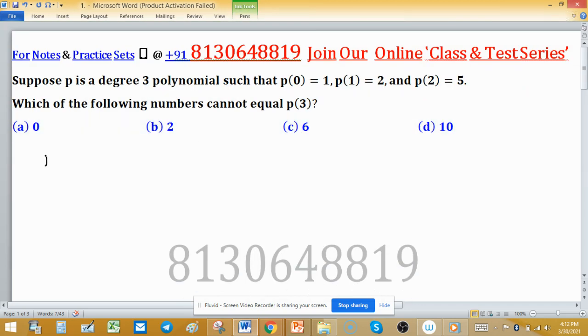As P(0) is 1, first condition, P(1) is 2 and P(2) is 5, these are 3 conditions over a 3 degree polynomial. So consider a 3 degree polynomial Ax³ + Bx² + Cx + D, this is a 3 degree polynomial.